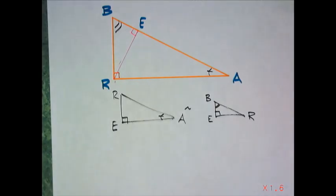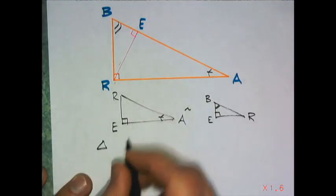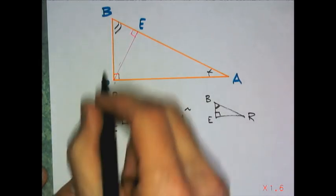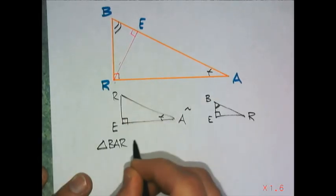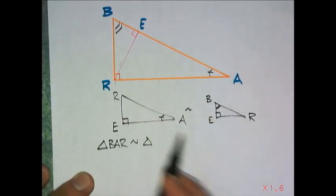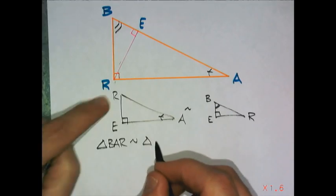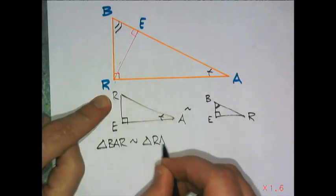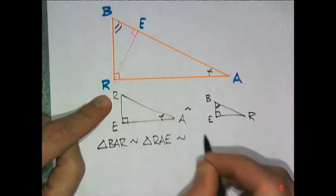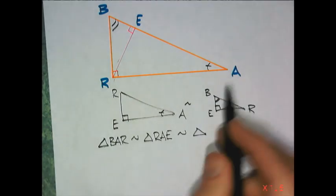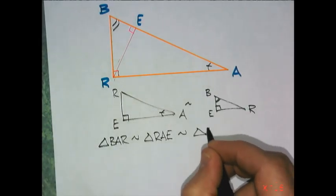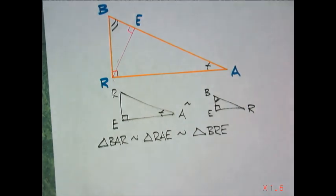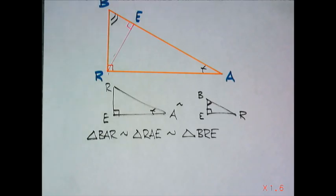So let's write that out. Triangle BAR is similar to triangle RAE, which is similar to triangle BRE. That's the first step. So now we have got three similar triangles.